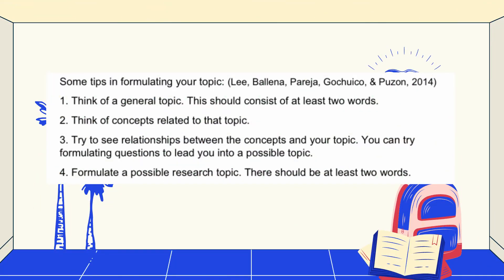Some tips in formulating your topic according to Lee, Balena, Pareja, Gutiwiko, and Puson in 2014. First, think of a general topic — this should consist of at least two words; for instance, emotional intelligence. Number 2: Think of concepts related to the topic — if you have emotional intelligence in mind, you may want to correlate it with academic achievement. Number 3: Try to see relationships between the concepts in your topic and formulate questions to lead you into a possible topic. Lastly, formulate a possible research title — there should be at least two words.